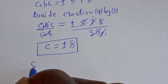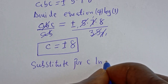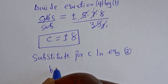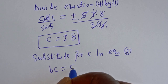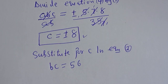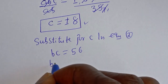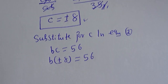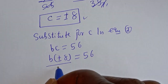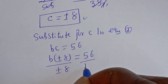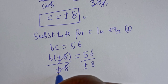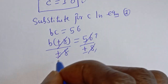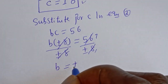Now let's substitute for C in equation 2. Equation 2 is BC equal to 56, and C is equal to plus or minus 8. Then B multiplied by (plus or minus 8) is equal to 56. Let's divide both sides by plus or minus 8 — this cancels. Then B is equal to plus or minus 7. This is the value of B.